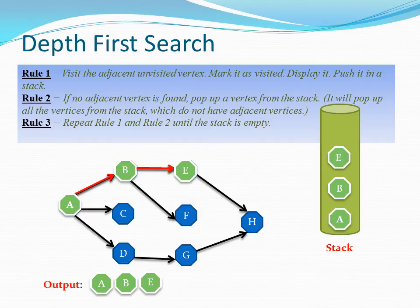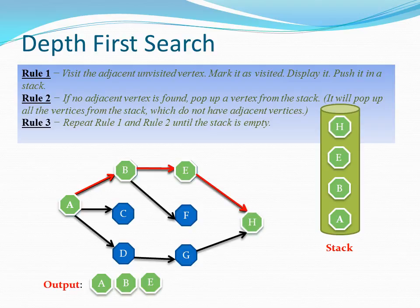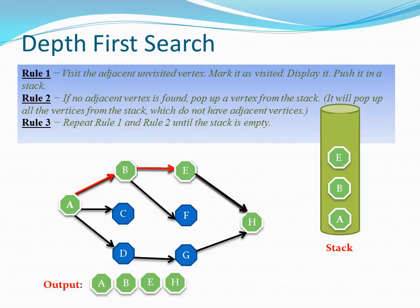E is now visited and added to the stack. From E, rule one can again be applied because it has an unvisited vertex, so we visit H. From H there are no further vertices, so rule two applies: if no adjacent vertex is found, pop the vertex from the stack. H doesn't have any other adjacent vertex, so we pop it from the stack. When a pop happens we are backtracking the path we traveled, so now we return to E.